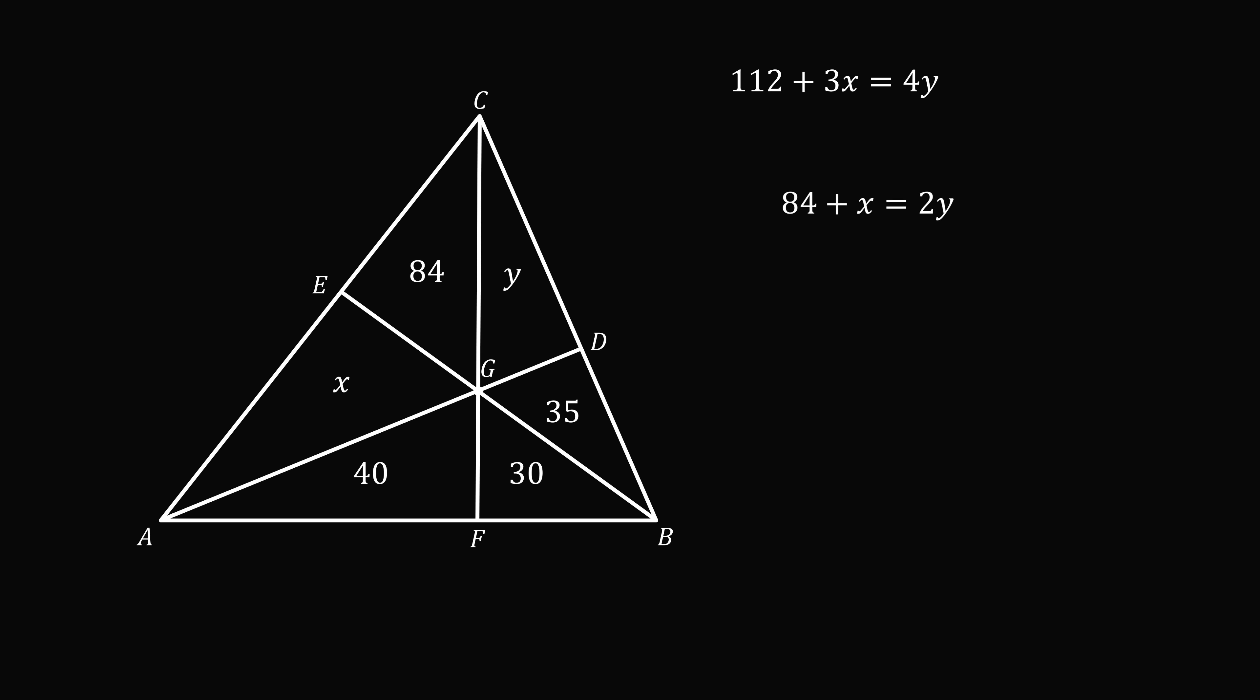So now we have two equations for x and y. So we'll solve for x and y. We'll multiply the second equation by 2 giving 168 plus 2x equals 4y. The first and third equations are equal to 4y, so they must be equal to each other. So 168 plus 2x equals 112 plus 3x. Simplifying gives that x equals 56.